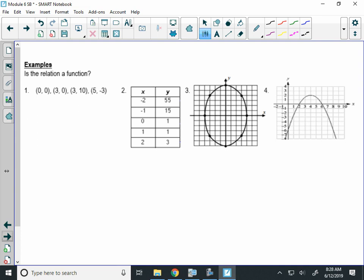Well, let's put the definition of a function to work. Let's decide if these graphs, tables, and ordered pairs are functions. So, the first one here. In order to tell if a set of ordered pairs is a function, I'm looking only right now at the x value. I want to start by saying, do any of those x values repeat? The x that equals 3 repeats itself. Now I look at the y values. It has two different y values, 0 and 10. Because those y values are not the same, this is not a function.